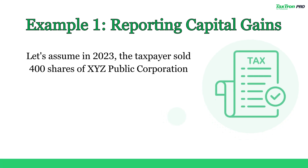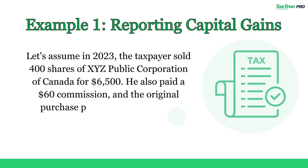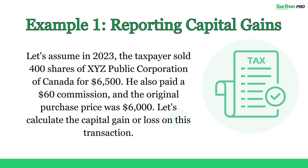Let's assume in 2023, the taxpayer sold 400 shares of XYZ Public Corporation of Canada for $6,500. He also paid a $60 commission, and the original purchase price was $6,000. Let's calculate the capital gain or loss on this transaction.